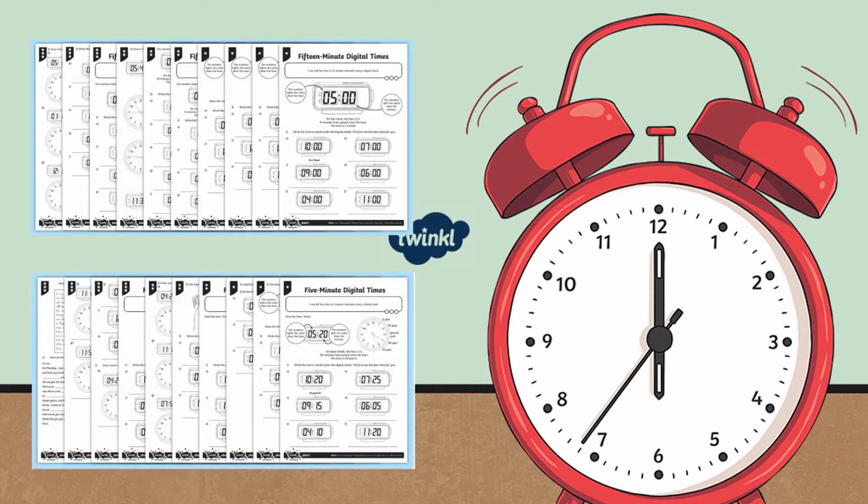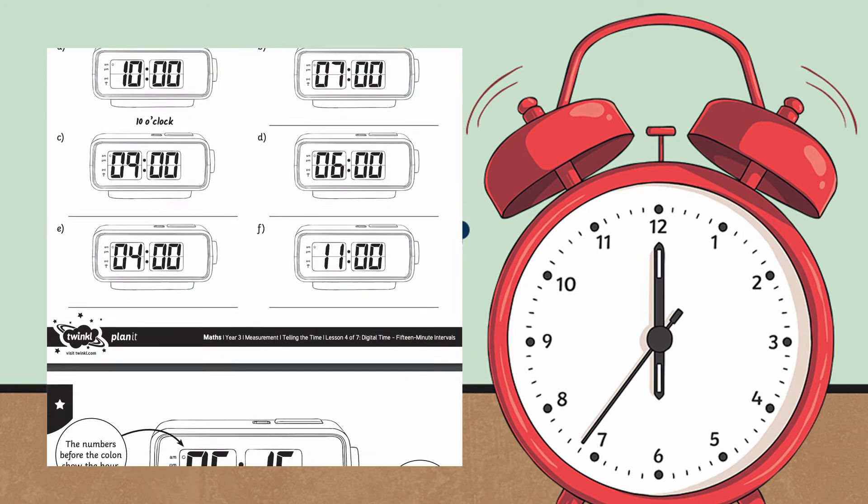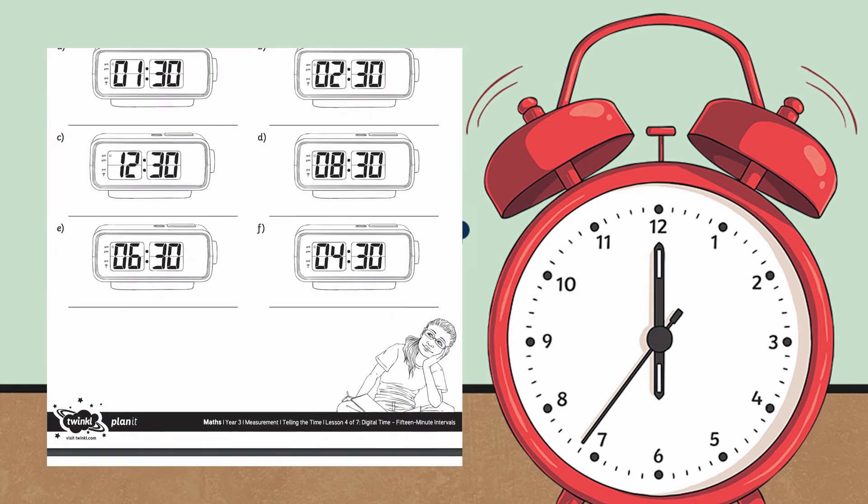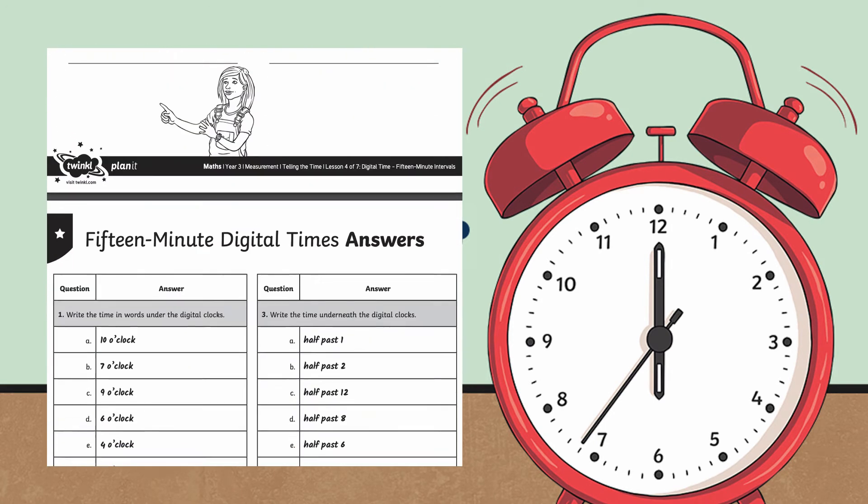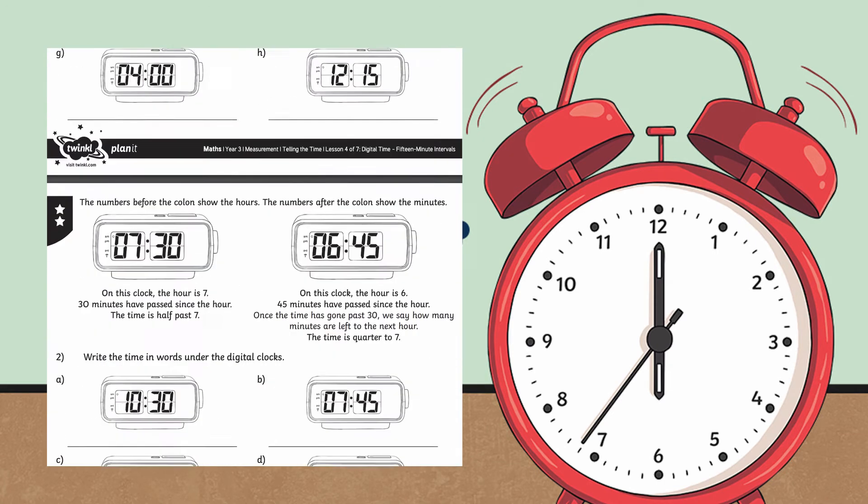Children can practice reading the 24-hour clock with these 15-minute digital times differentiated worksheets and 5-minute digital times differentiated worksheets. Both sets of worksheets are differentiated and include answers.